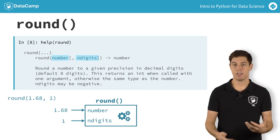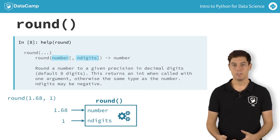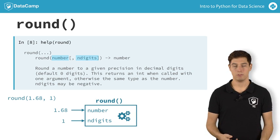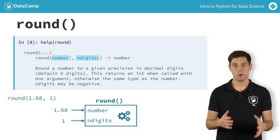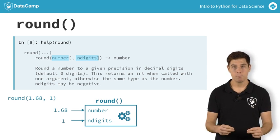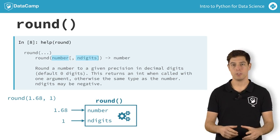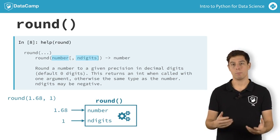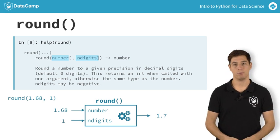Next, the round function does its calculations with number and n digits, as if they are variables in a Python script. We don't know exactly what code Python executes. What is important, though, is that the function produces an output, namely the number 1.68 rounded to one decimal place.